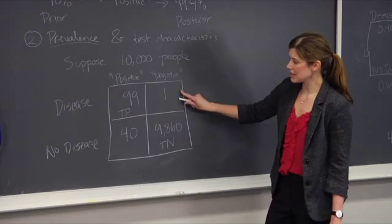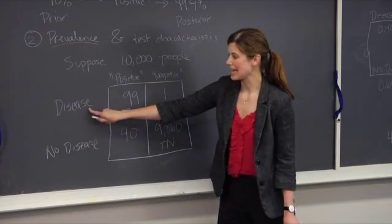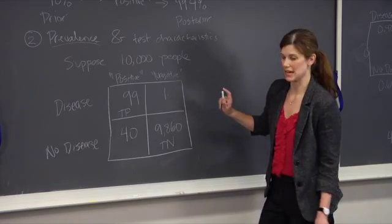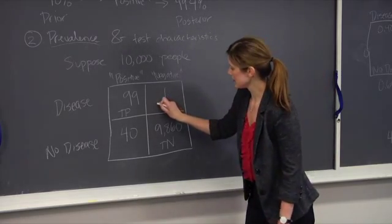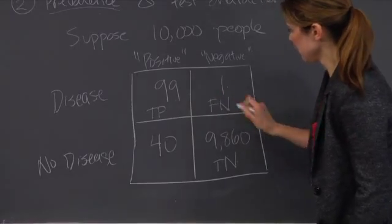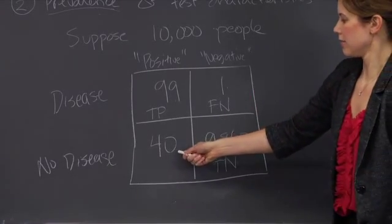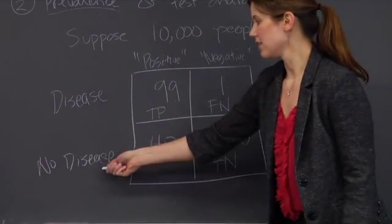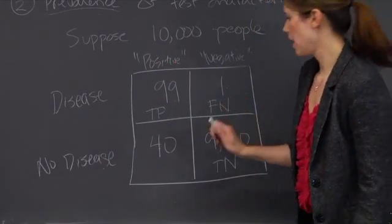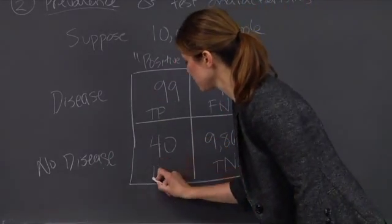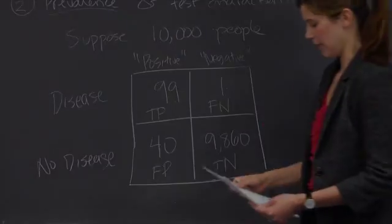In this compartment, about one person who has the disease will have a negative test. This is referred to as a false negative. And similarly, about 40 people will not have the disease but will end up with a positive test result. And this is what's referred to as the false positive rate.